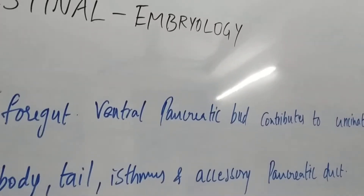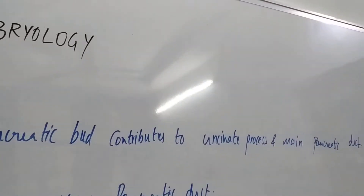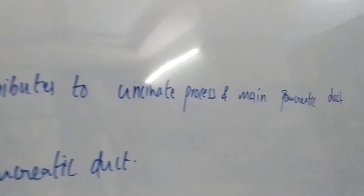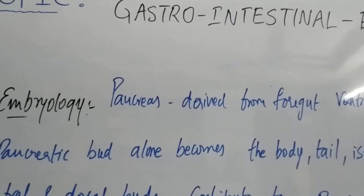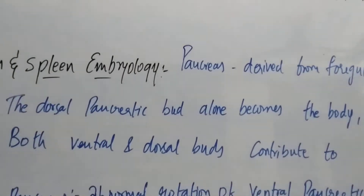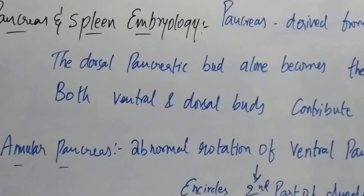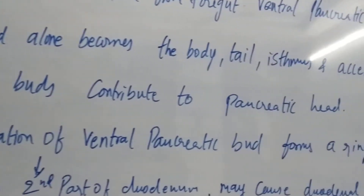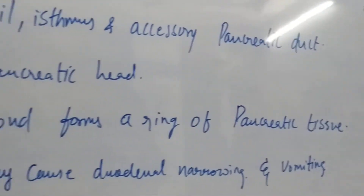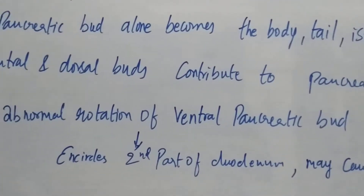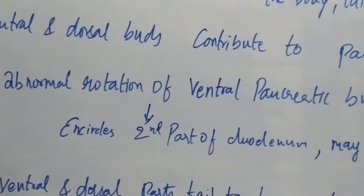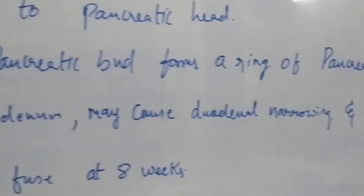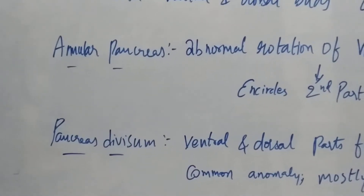Annular pancreas is the abnormal rotation of the ventral pancreatic bud, which forms a ring of pancreatic tissue that encircles the second part of the duodenum. It may cause duodenal narrowing and vomiting.